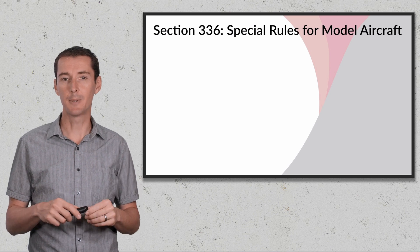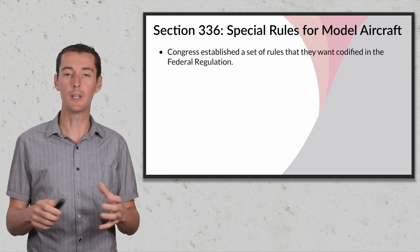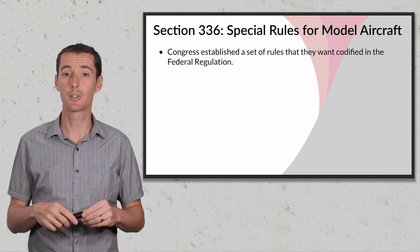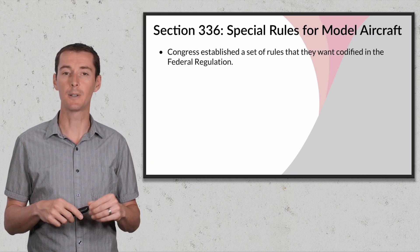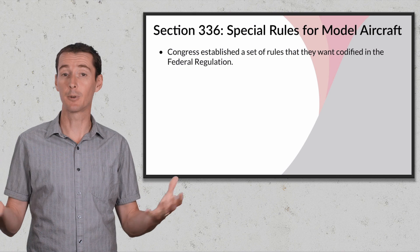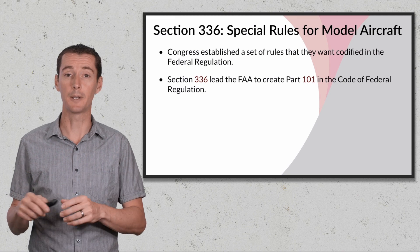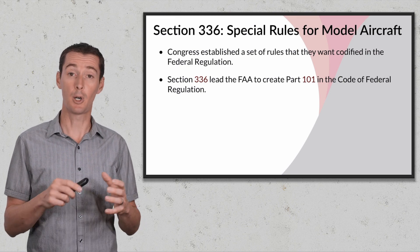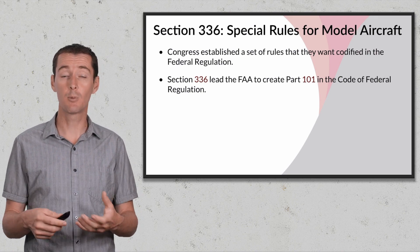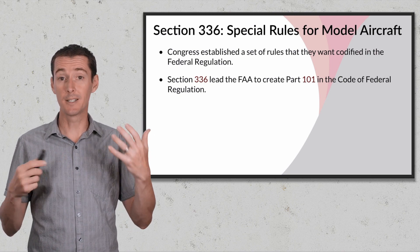The first one I want to talk about is Section 336, which covers the special rules for model aircraft. If you are a hobbyist, a newbie, or somebody who's just started to fly, this is the regulation you're going to follow. Section means that Congress established a set of rules and told the FAA to make them into regulation — into the Code of Federal Regulations, which is where FAA regulation lives. Section 336 led the FAA to create what we call Part 101. When we talk about regulation we talk about parts: Part 101, Part 107, and for pilots, Part 61, Part 91.